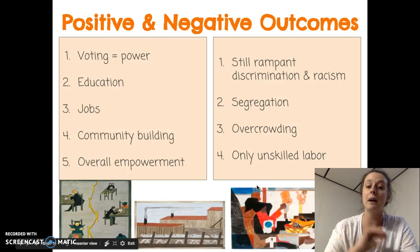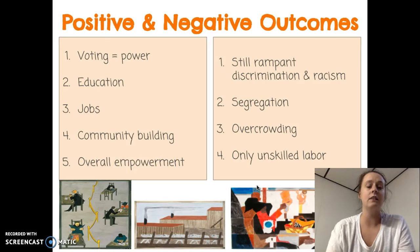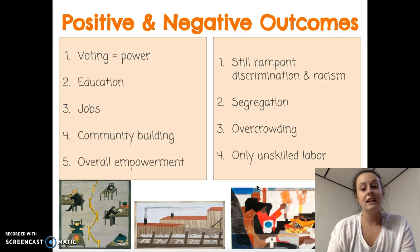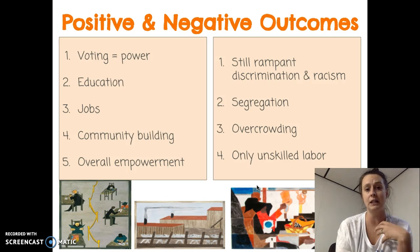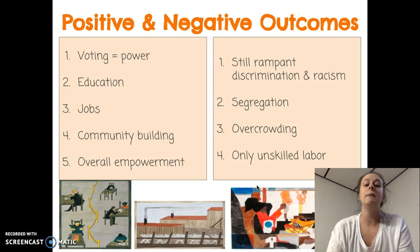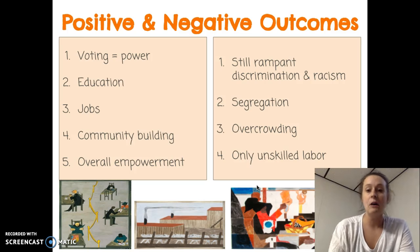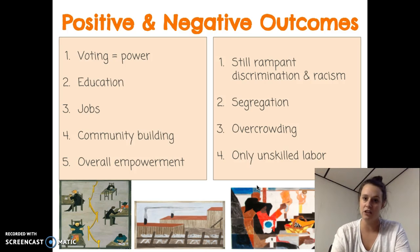There were positive and negative outcomes to the Great Migration. Positives included easier voting, educational and job opportunities, and African-Americans building community in the North around their shared experience of migration — overall, people were more empowered. However, there was still rampant discrimination, racism, and segregation in the North.